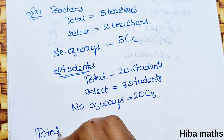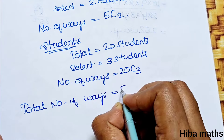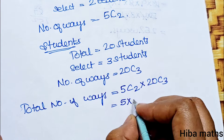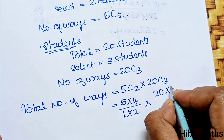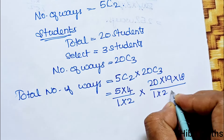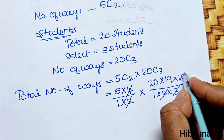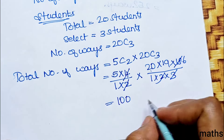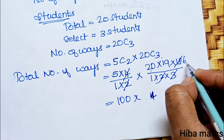Total number of ways = 5C2 × 20C3. Expanding: 5 × 4 divided by 1 × 2, multiplied by 20 × 19 × 18 divided by 1 × 2 × 3. Simplifying: 2 twos are 4, 6s are 18, giving us 10 × 1140.